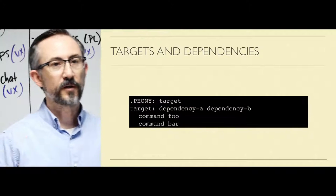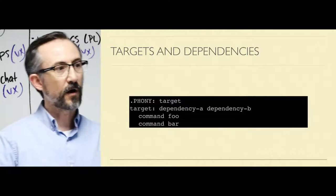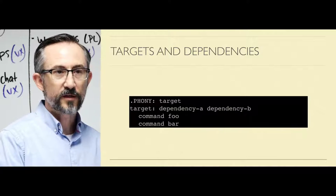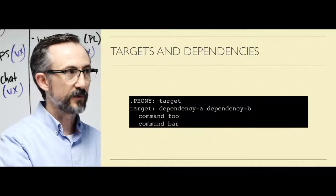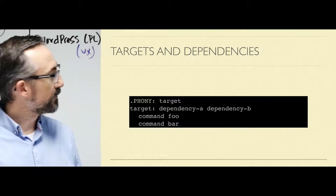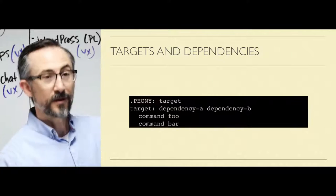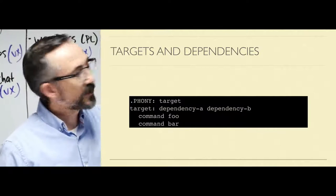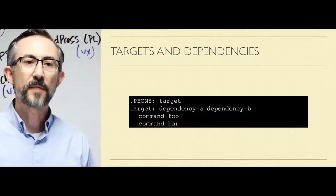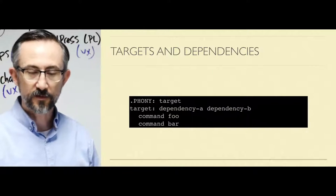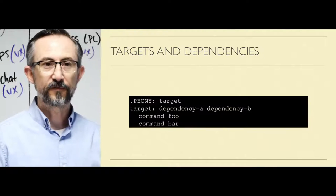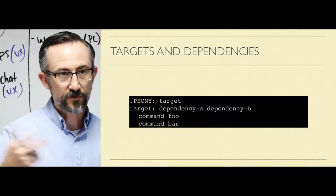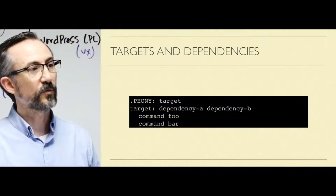A target — there are two kinds of targets: real targets and phony targets. A real target is like a file or a directory in the file system, something you could find using ls. A phony target is not. A phony target is declared like this: you say .PHONY, and any target after that becomes a phony target. Make treats that specially. What a phony target tells Make is: don't bother checking the file system to see if it's up to date. Just run the rule associated with this target. Phony targets will always run.